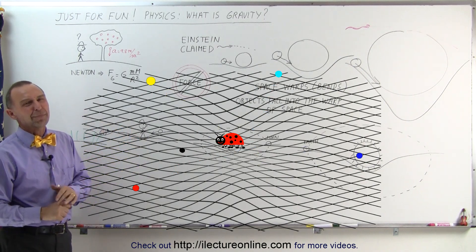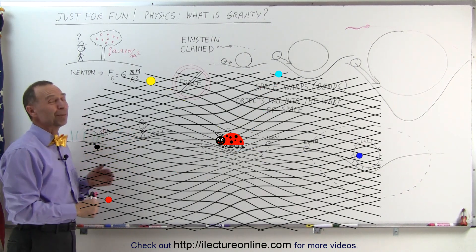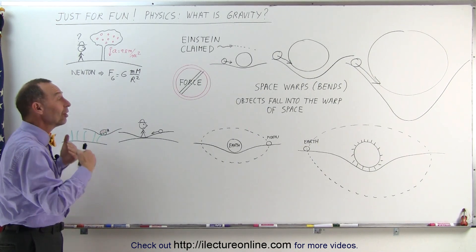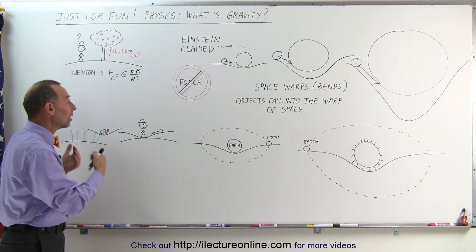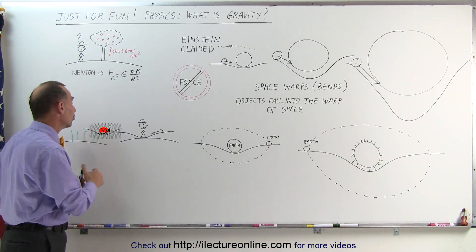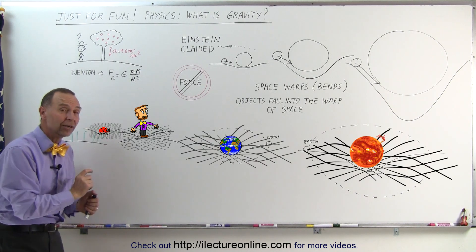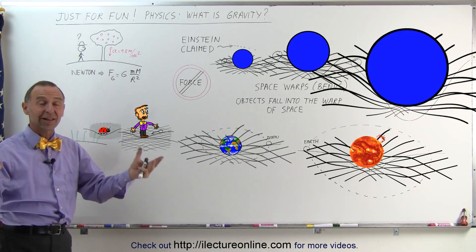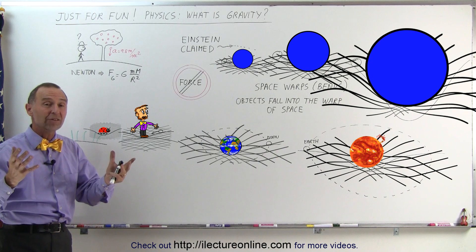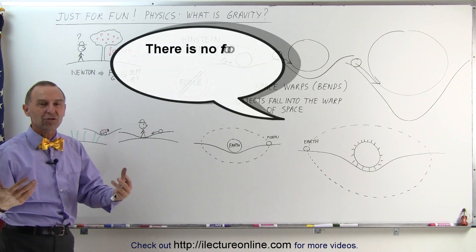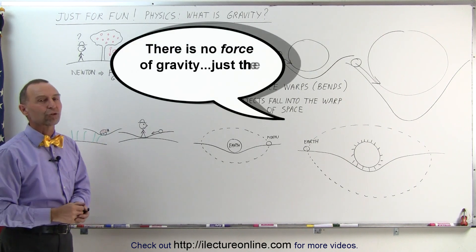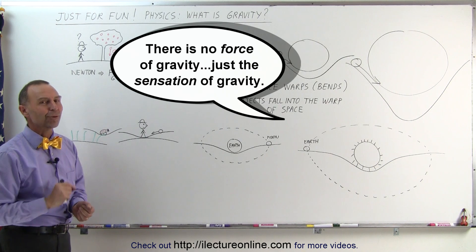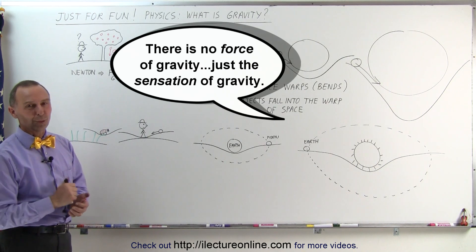Of course, that would not be possible to measure because it would be very difficult. But there is no limit as to what objects can do to space, no matter how small they are. All objects in the universe bend space, and it is that bending of space that creates the sensation of the force of gravity. And that is gravity according to Einstein.